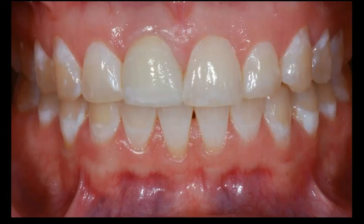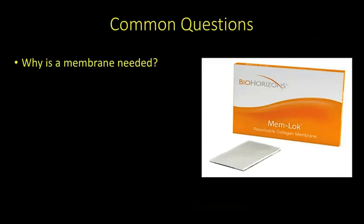Common questions about membranes: Why is a membrane needed? Generally, anytime you are missing any bone on the facial or lingual plate, you must use a membrane. Without one, soft tissue will blow through the fenestration and invade the socket, resulting in connective tissue instead of bone. Will any membrane suffice? I recommend a rigid, resorbable membrane — it must be resorbable, and I like rigid because I can pack without worrying about tearing it.